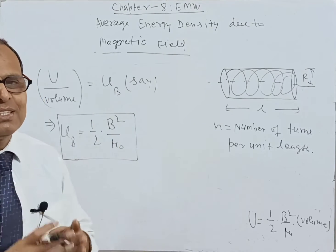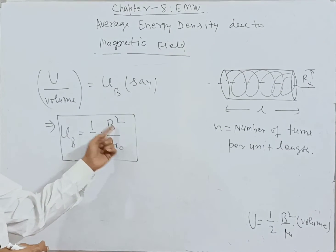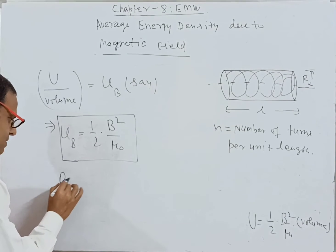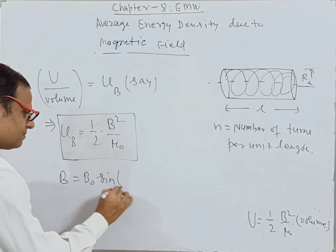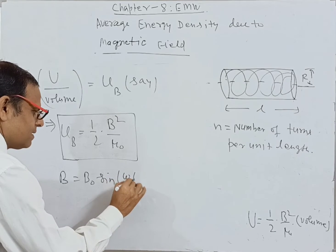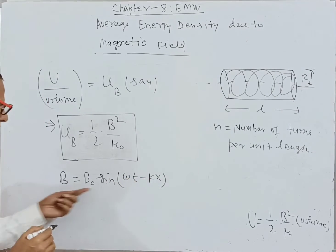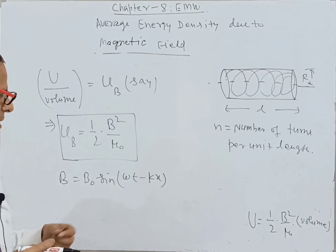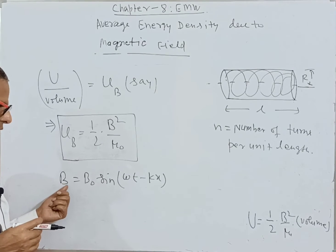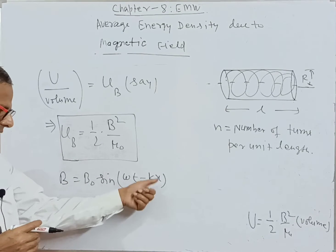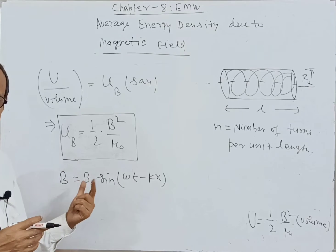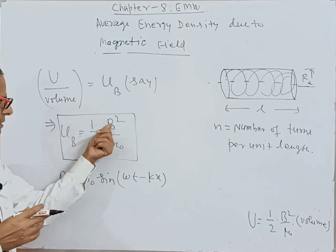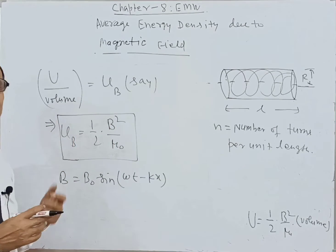The interesting thing is that B is variable. Why variable? Because B = B₀sin(ωt − kx); this is the wave equation for the magnetic field. Since B is varying due to variation of t and x, B is a function of x and t. So the variation of B means the variation of energy density per unit volume.